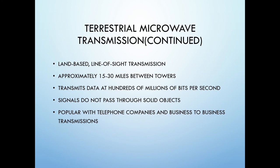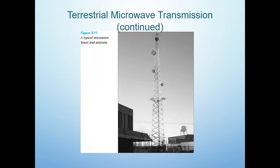As microwave travels in straight lines, antennas have to be aligned and each antenna must be inside the line of sight of the next. In addition to these limitations, its cost is relatively high, which makes it affordable only for corporations and telecommunication companies. This picture displays a microwave tower.